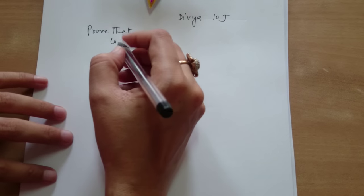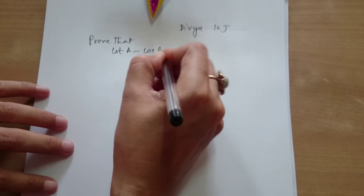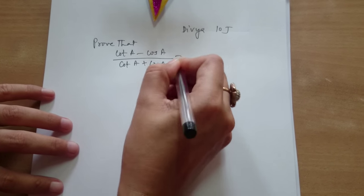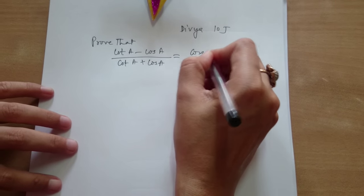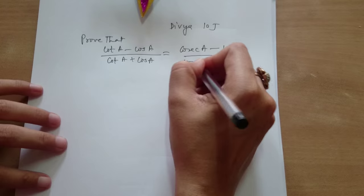Divya, prove that. What's the question? Cot A minus cos A upon cot A plus cos A is equal to cosecant A minus 1 upon cosecant A plus 1.